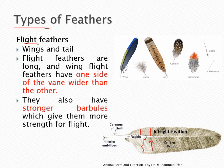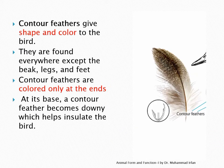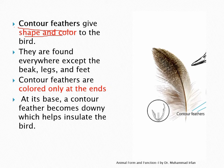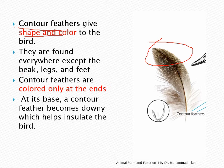In flight feathers, the shaft gives rise to barbs, and barbs give rise to barbules. These barbules are stronger in flight feathers to support flight. Contour feathers, as their name suggests, give the bird its shape and color. They are found everywhere except the beak, legs, and feet. Contour feathers are colored at the tip of the shaft or rachis, and at the base they become fluffy — called downy — to help insulate the bird.